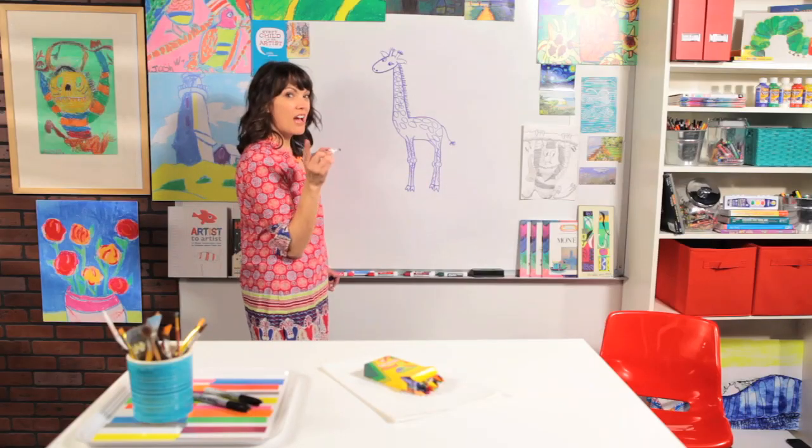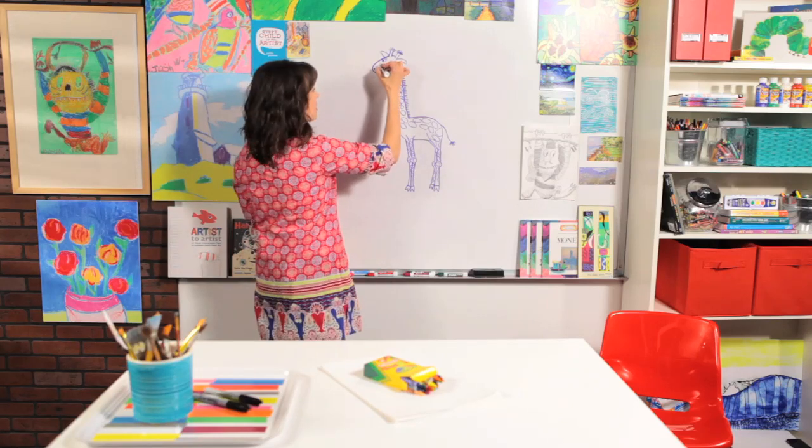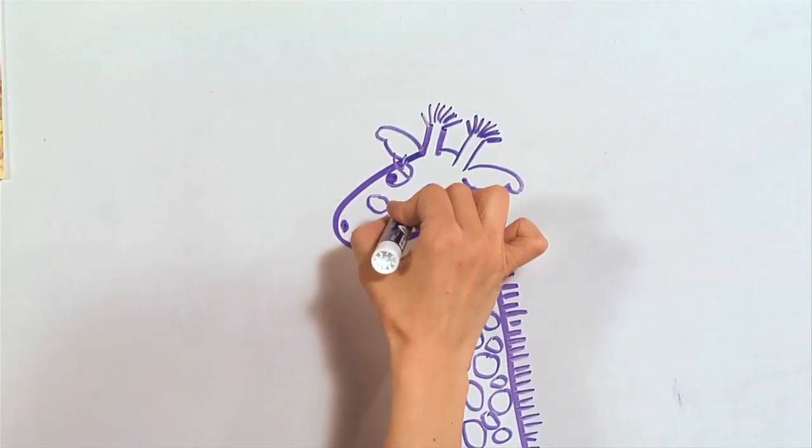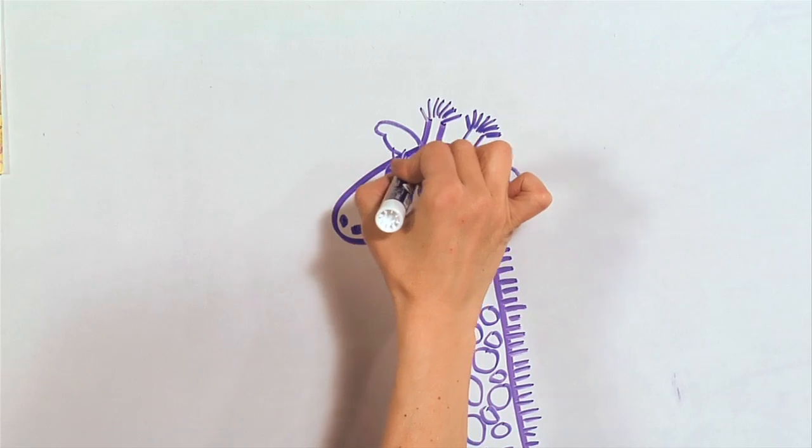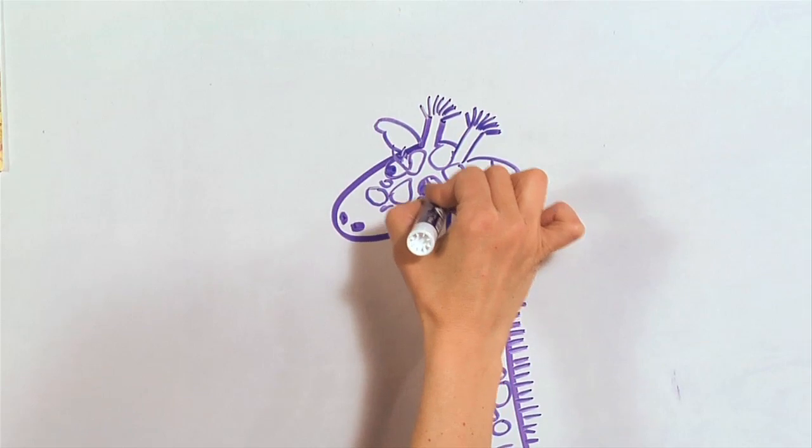And we have our giraffe. Now, I think we can do one more thing. I think we can add a few spots on their face. They still have spots up here. So I'm going to add a couple of those spots up here on the head and the ears.